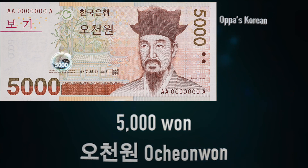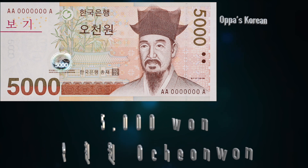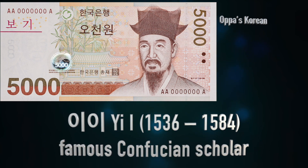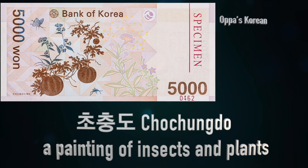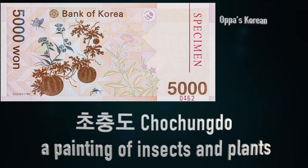The next bill is 5,000 won. The front side of the bill features Lee Yi, also a famous Confucian scholar from the Joseon dynasty. The back side is another famous painting, Chochung-do, which is a painting of insects and plants. This painting was made by Shin Saimdang, who is Lee Yi's mother.